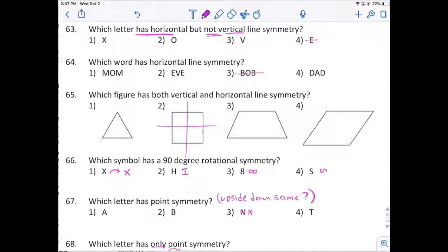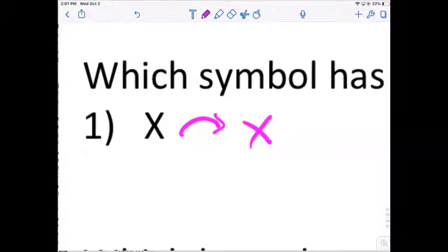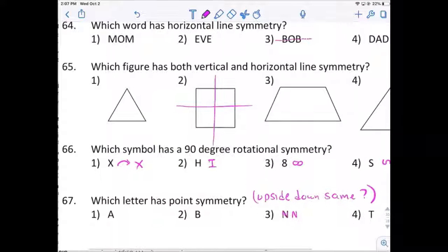Number 66. 90 degrees means turning on its side and it looks the same. I understand X, you might think it's taller than it is wide, but if that were a perfect X, it would work. If you want to argue that one, I understand.